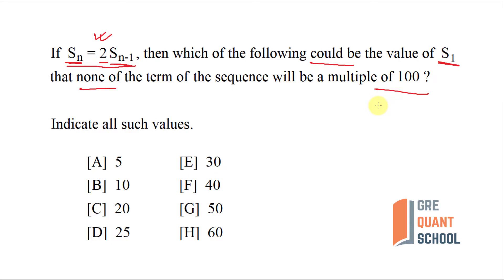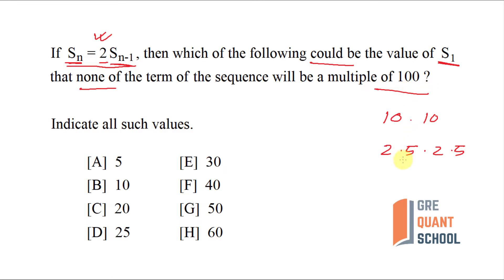For a term to be a multiple of 100, let's see what factors 100 has. 100 is 10 into 10, which is 2 into 5, whole square — that is 2 into 5 into 2 into 5. So for a number to be a multiple of 100, it must have at least two 5s and two 2s as factors.